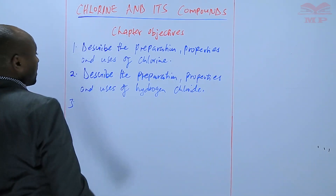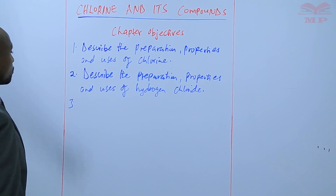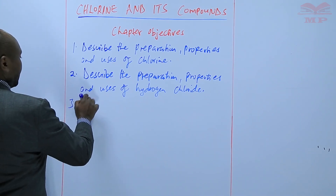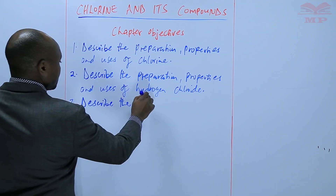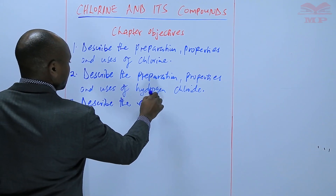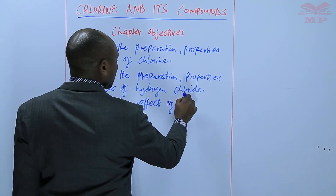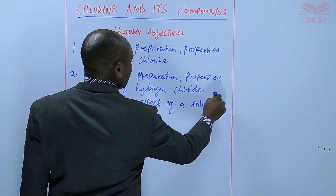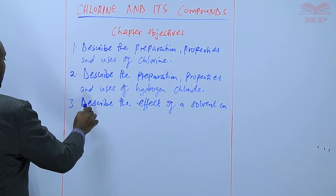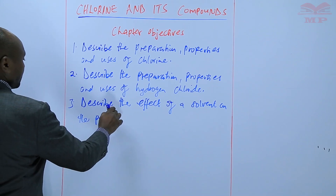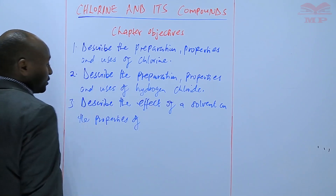Objective number three is to describe the effects of a solvent on the properties of hydrogen chloride.